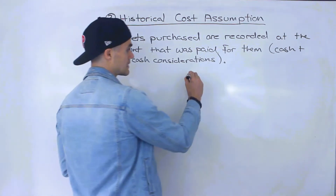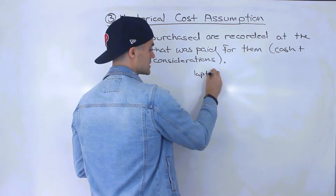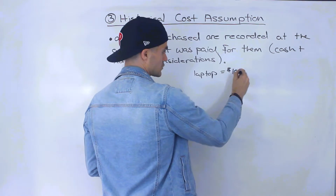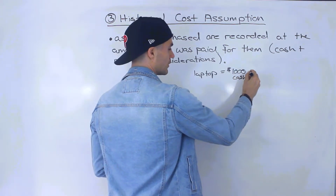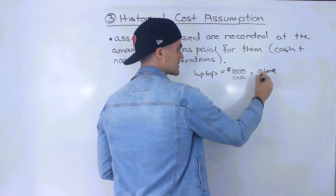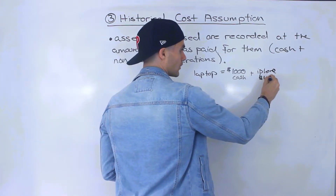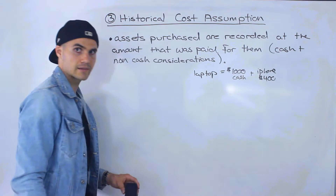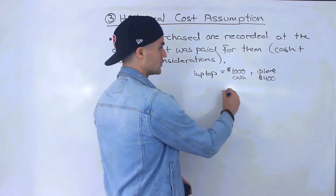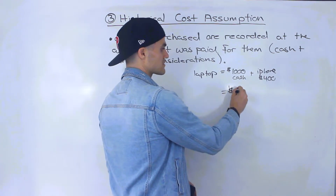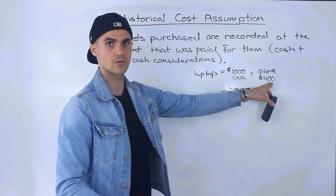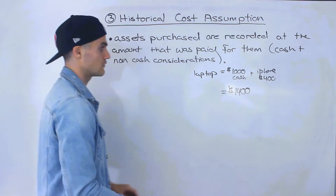For example, let's say that you buy a laptop for your business, and you give someone $1,000 cash for it, plus your iPhone. Let's say that the iPhone is valued at $400 — if you were to take it to the market and sell it, it would be around $400. So you would value this laptop on your books at $1,400: the cash plus the non-cash consideration given for it.